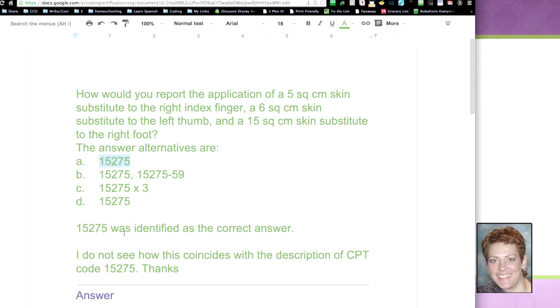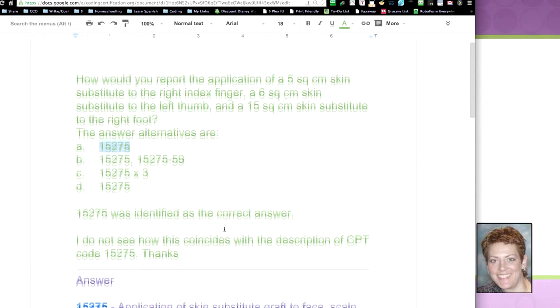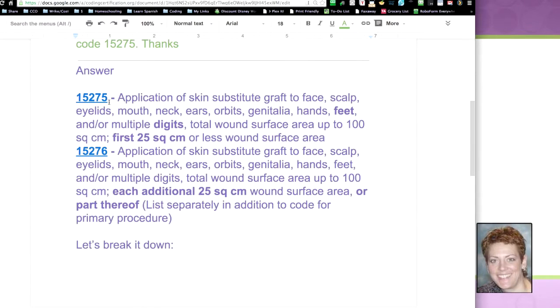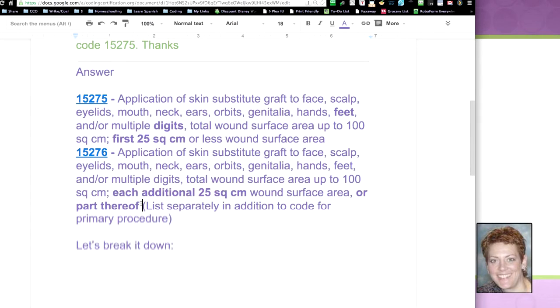She said 15275 was identified as the correct answer. I don't see how this coincides with the description. So I went and pulled up 15275 and 276. The 275 is for the first 25 square centimeters, and the 276 is for each additional or part thereof. I'm so glad they finally added that language to CPT for these.